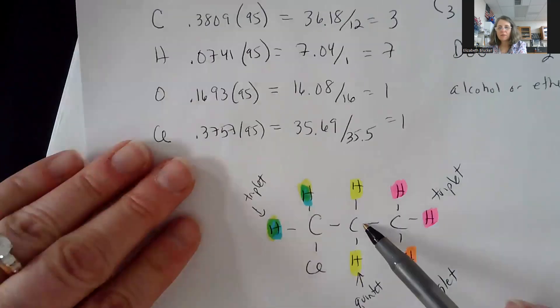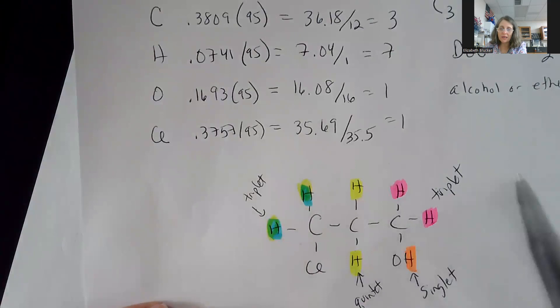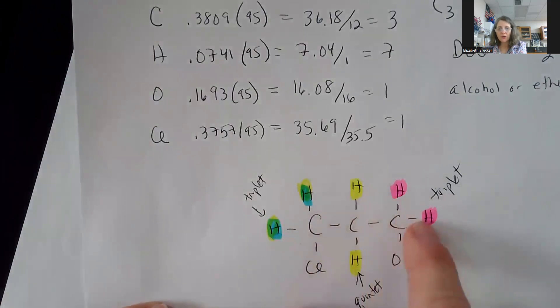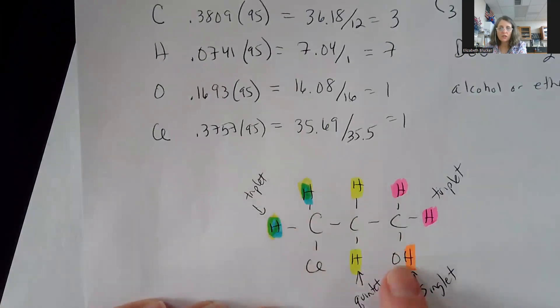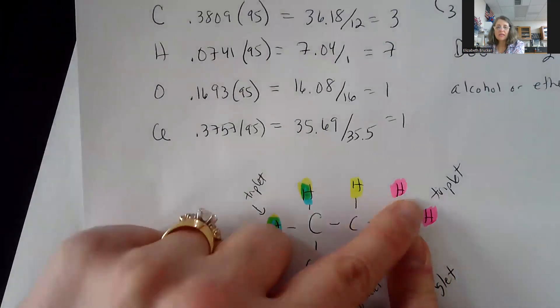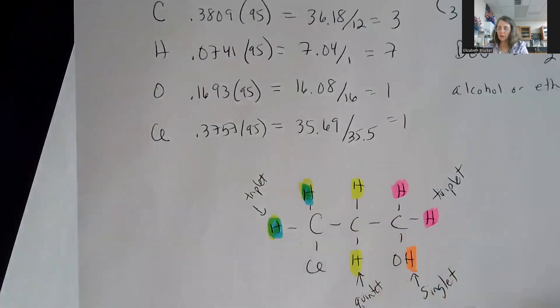And then here, this is your quintet. Whenever you're in the middle of the molecule, chances are you're going to have bigger splitting patterns. Because if I am the yellow hydrogens here, my neighbors are these two and these two. And please remember, the hydrogen that's on the OH is blocked. You do not see that hydrogen on that carbon. So you only see these two and these two, which makes it a quintet.